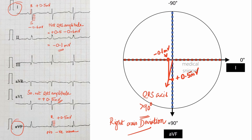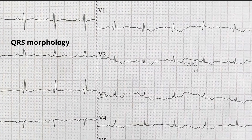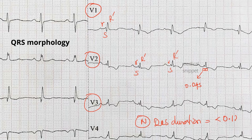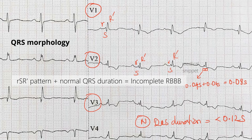Next we will check the QRS morphology in leads V1 to V3. In lead V2 there is an RSR pattern, but the QRS duration is normal, that is within three small boxes. One small box is 0.04 seconds, that is less than 0.12 seconds. In this ECG the QRS duration is 0.08 seconds, as it occupies only two small boxes. RSR pattern with normal QRS duration is called incomplete right bundle branch block.